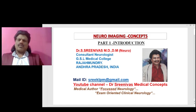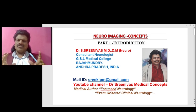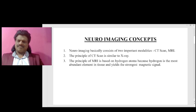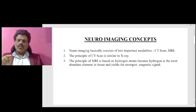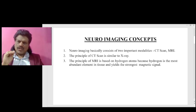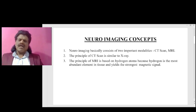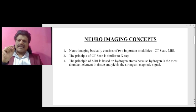Today we are going to kickstart with neuroimaging concepts. The first episode is introduction to neuroimaging concepts. Neuroimaging basically consists of two important modalities: CT scan and MRI. The principle of CT scan is similar to X-ray. The principle of MRI is based on hydrogen atoms, because hydrogen is the most abundant element in tissue and yields the strongest magnetic field.